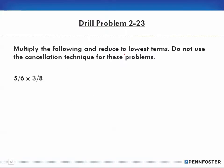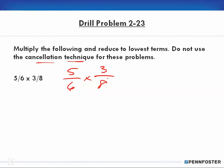It says multiply the following and reduce to the lowest terms — do not use the cancellation technique for these problems. By not using the cancellation technique, all you're doing is working with larger numbers. We always try to use as small numbers as we possibly can, but this problem wants you to be able to reduce to lowest terms without canceling first.